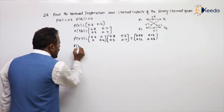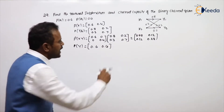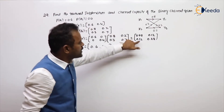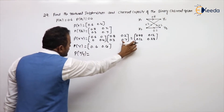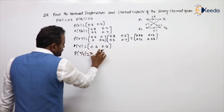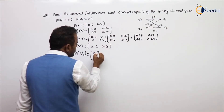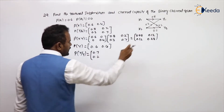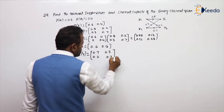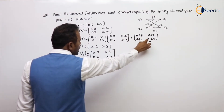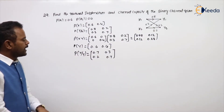To get output probabilities P(y), add the columns: 0.6 and 0.4. To get input probabilities, add the rows: 0.6 and 0.4. To get P(x|y), divide each column of the joint matrix by the corresponding P(y). Dividing the first column by 0.6 gives [0.8, 0.2]; dividing the second column by 0.4 gives [0.3, 0.7]. Column-wise totals equal 1.